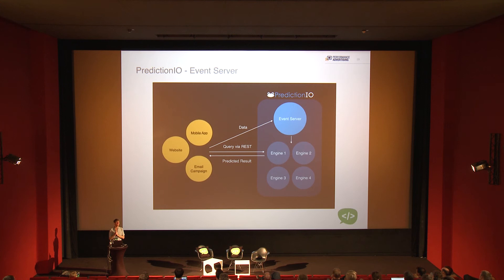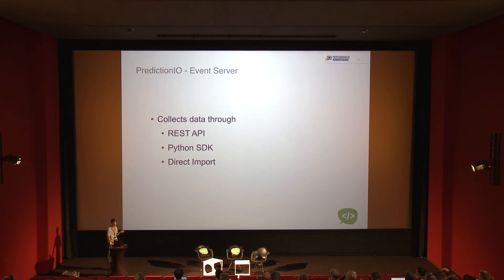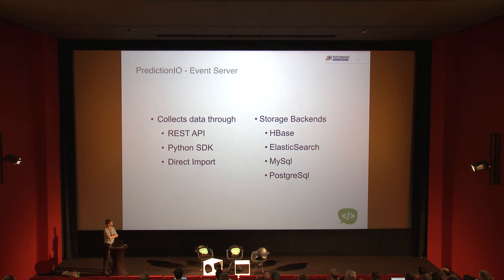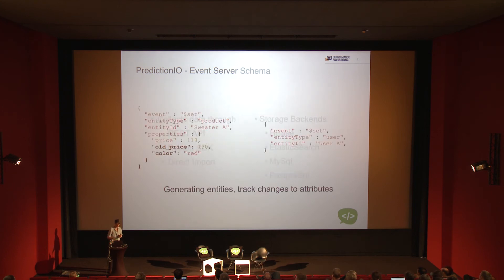The good thing about the event server is that it abstracts away the database. How do you get data in? It's a straightforward REST API — you can send requests directly from your website to push data. There's also a Python SDK for bulk imports. Under the hood, the event server has several storage backends: the most powerful is HBase for storing large amounts of data. You can also use Elasticsearch for more querying, or MySQL and Postgres for smaller projects.